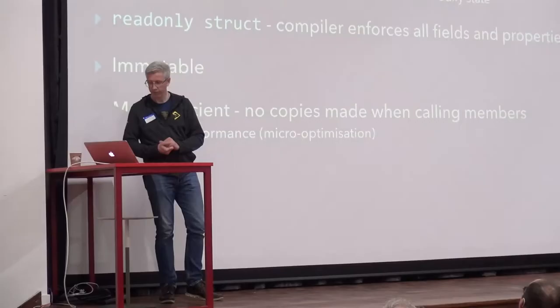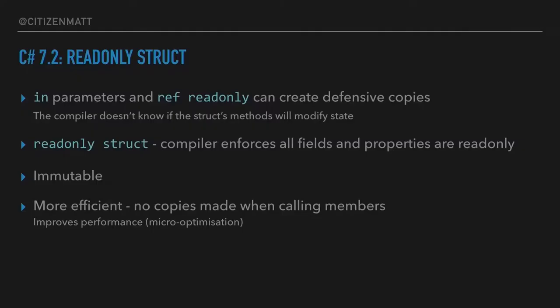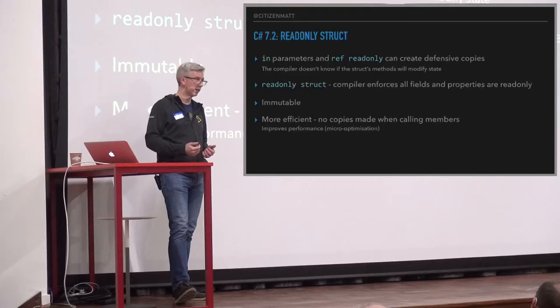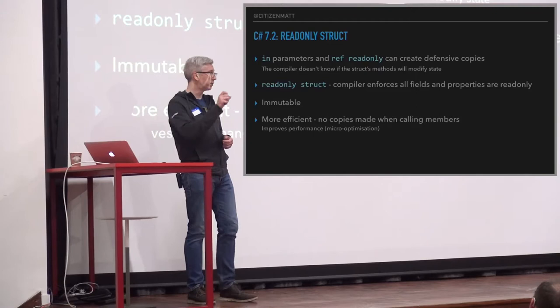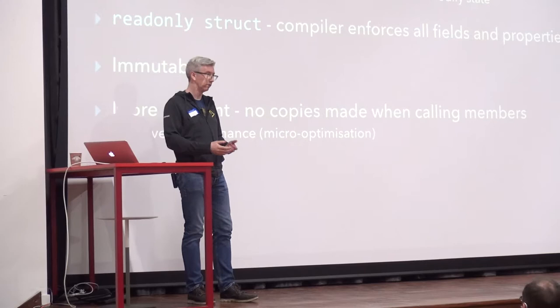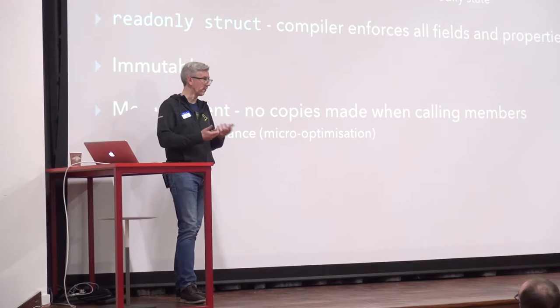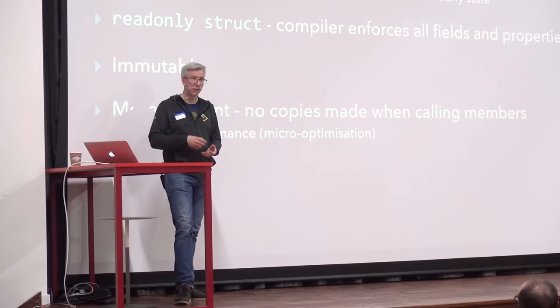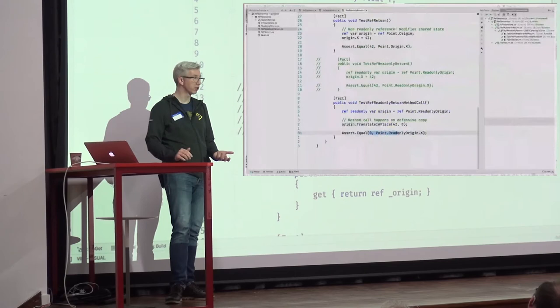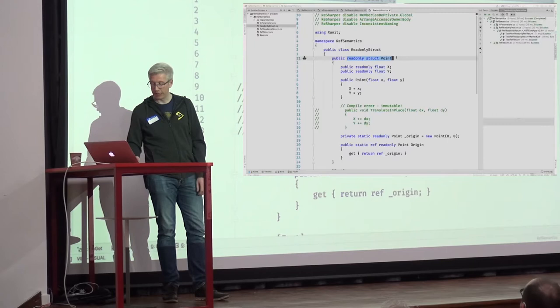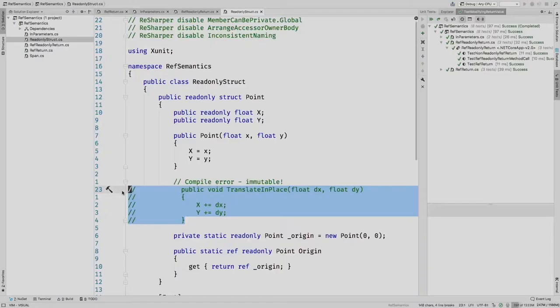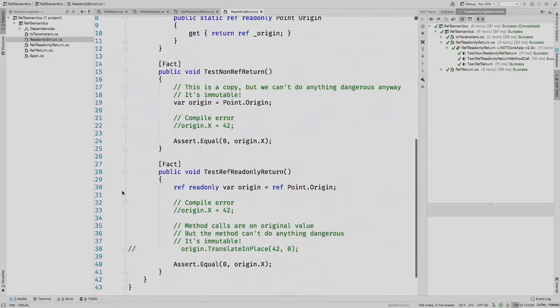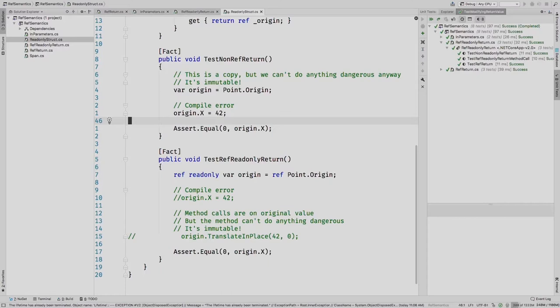Two last features. `readonly struct` is one of them — you can declare the struct itself as being read-only and the compiler will enforce all these things and stop making defensive copies. If you put the `readonly` modifier on the struct, all of your fields have to be read-only, making it immutable. If your fields are read-only, your methods themselves can't modify the current instance — and the compiler knows it's immutable, so it doesn't need to make any copies. The syntax is simple: `public readonly struct`. This enforces read-only fields, so `TranslateInPlace` becomes a compile-time error — you can't build it. And there are no changes to the CLR for this — it's all stuff the CLR could already do; C# is just now exposing it.